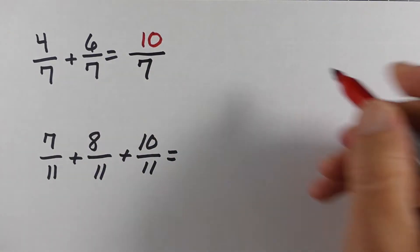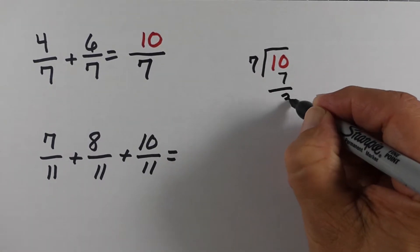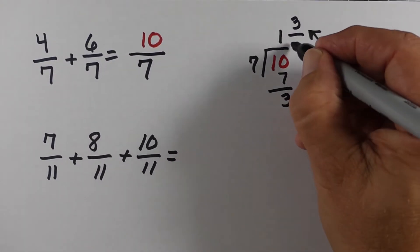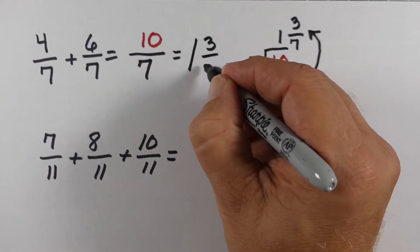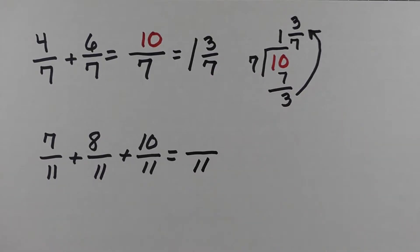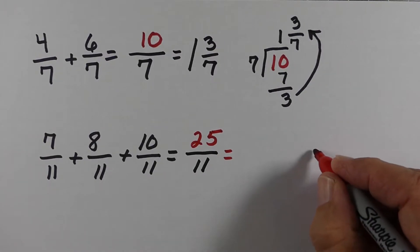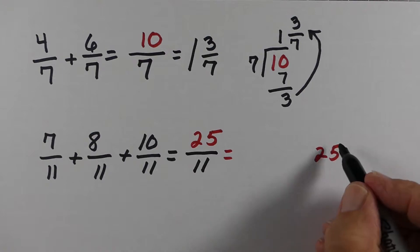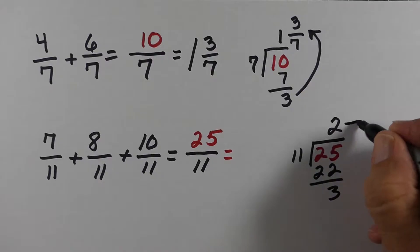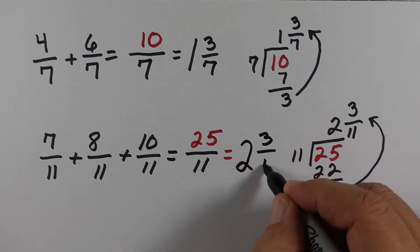In this next example, we add up to get 10/7. We put 10 on the inside and the denominator 7 on the outside. 7 goes into 10 once, we have a remainder of 3 which goes on top, and we keep our denominator of 7 — so 1 and 3/7. On the next problem, adding three fractions, we keep 11 as the denominator, add up all the numerators to get 25. 25 divided by 11 goes 2 times with a remainder of 3, so the answer is 2 and 3/11.